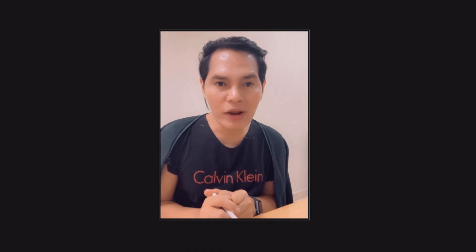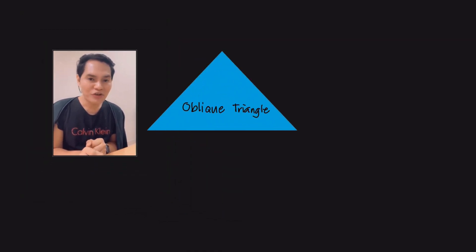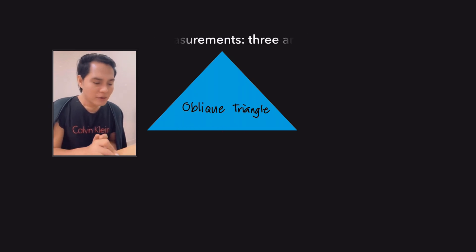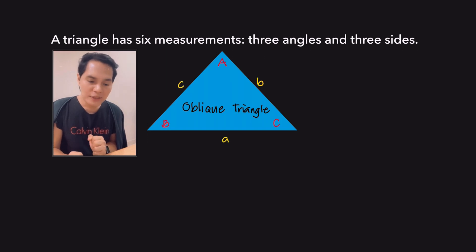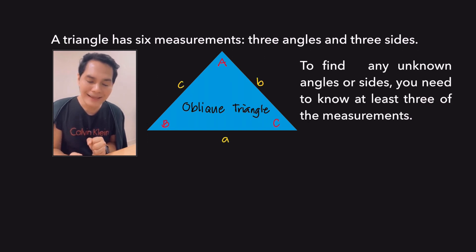When we talk about law of sines and cosines, we are actually referring to an oblique triangle, meaning it is a triangle that has no right angle. Remember that a triangle has six measurements — the three angles and the three sides. And to find any unknown angles or sides, you need to know at least three of the measurements.